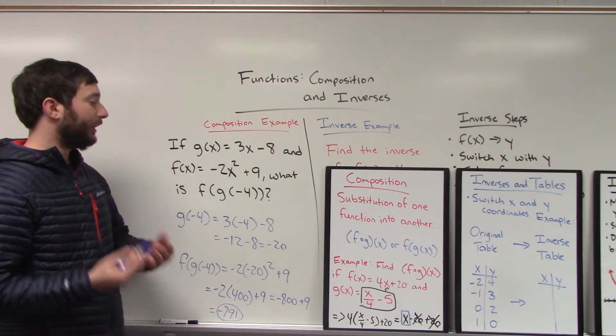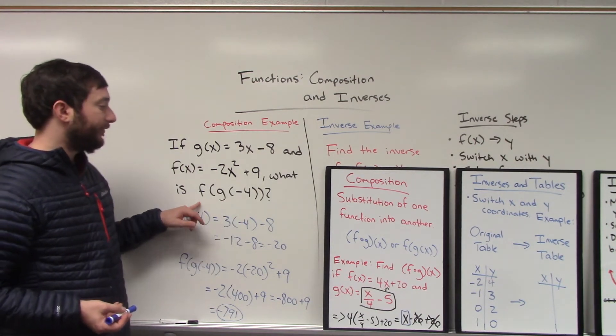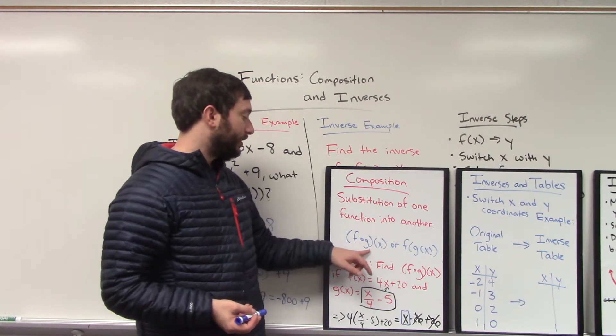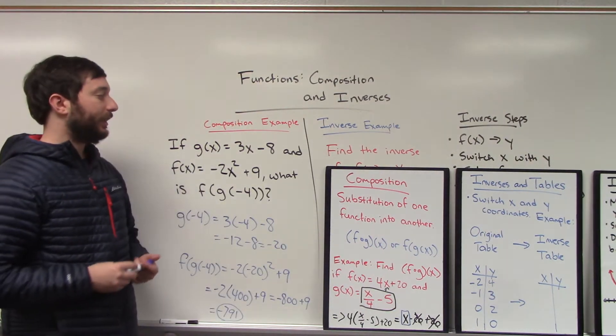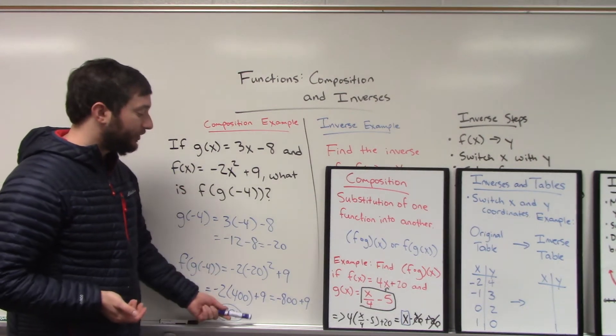So you're always basically working in reverse: negative 4 into g, that result into f, just like we had g into f for our other example. That's what composition is all about, substituting one function into another.